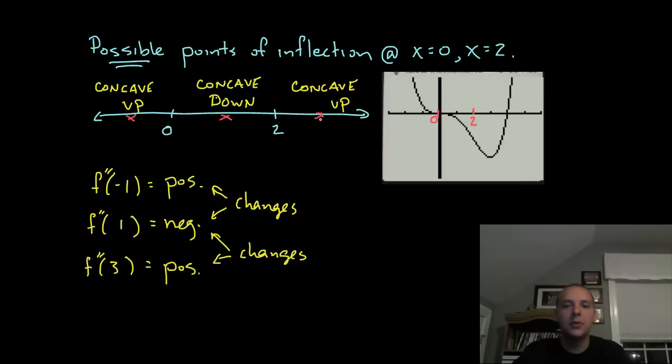What I did was I chose test points before zero, between zero and two and after two, namely negative one, one and three. And I plug them in the second derivative function and without going through the algebra I got a positive answer, a negative answer and then a positive answer. What that means is because the second derivative was positive before zero, it's concave up. Between zero and two it was negative, that means it's concave down and after two it was concave up.